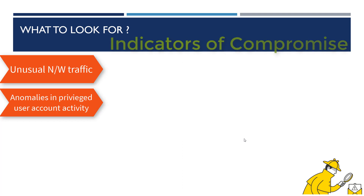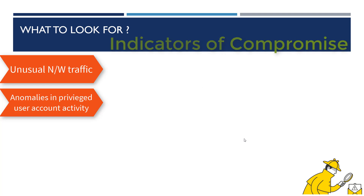If you see a lot of irregular network traffic going out of the device, that could be a possible indicator of compromise. You may also see anomalous activities with privileged user accounts outside the scope of a regular user, or geographic irregularities — for example, a user who always connects from Belgium but whose traffic is now coming from Southeast Asia or the United States.